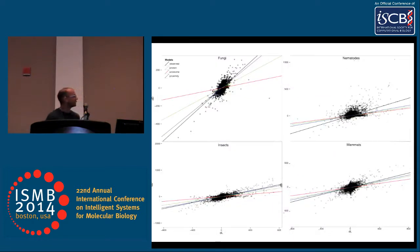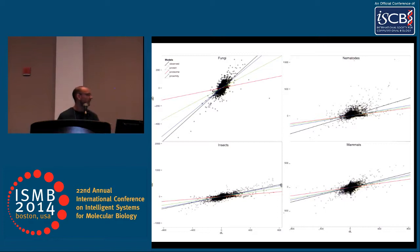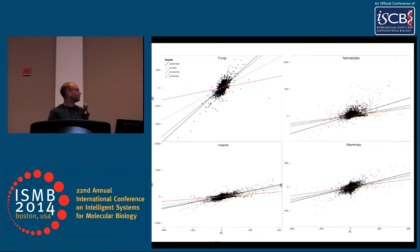We tested these three models on four datasets: yeast, nematodes, insects, and mammals — we excluded bacteria because the effect is much smaller there. The black line is the observed data, the red line is the proteome model, the green line is the protein model, and the blue line is the proximity model. In the typical example, the red line is far off, the green gets closer, and the blue is quite similar to the observed data.